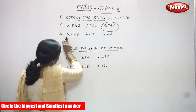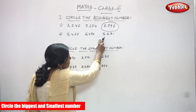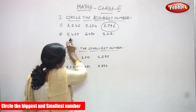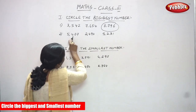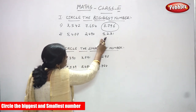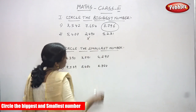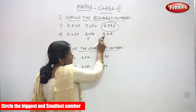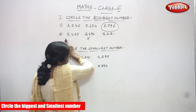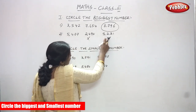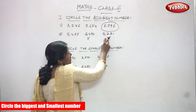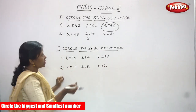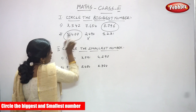Both 5487 and 5231 start with 5000, so you have to compare their hundreds place values. In 5487, the hundreds digit is 4, meaning 400. In 5231, the hundreds digit is 2, meaning 200. Which is greater — 400 or 200? 400 is greater, so 5487 is the biggest number and you circle it.